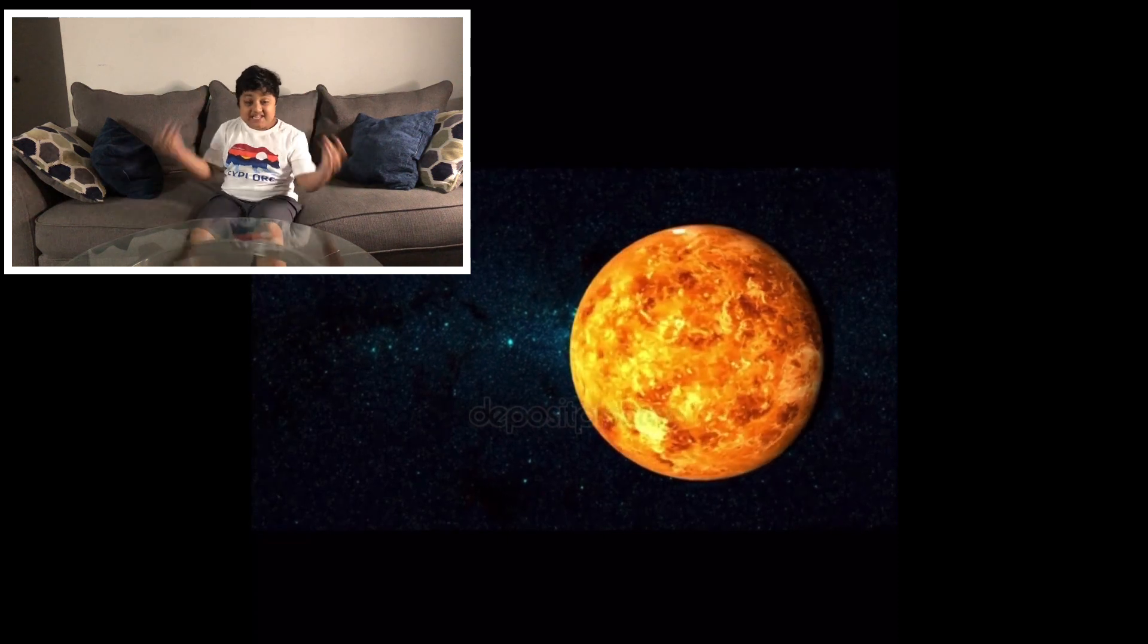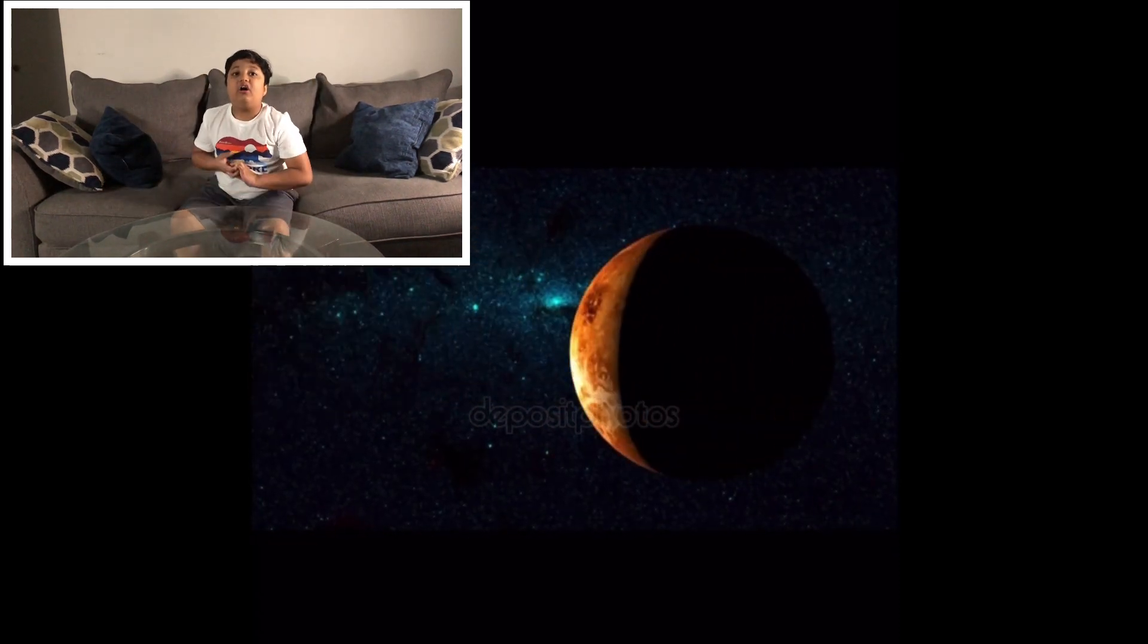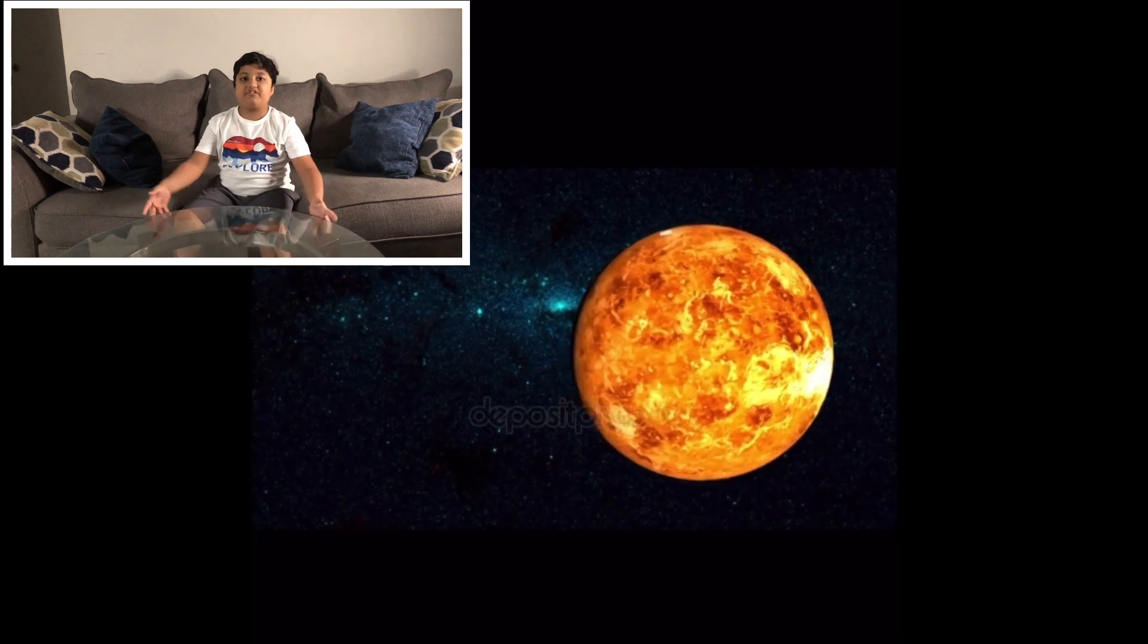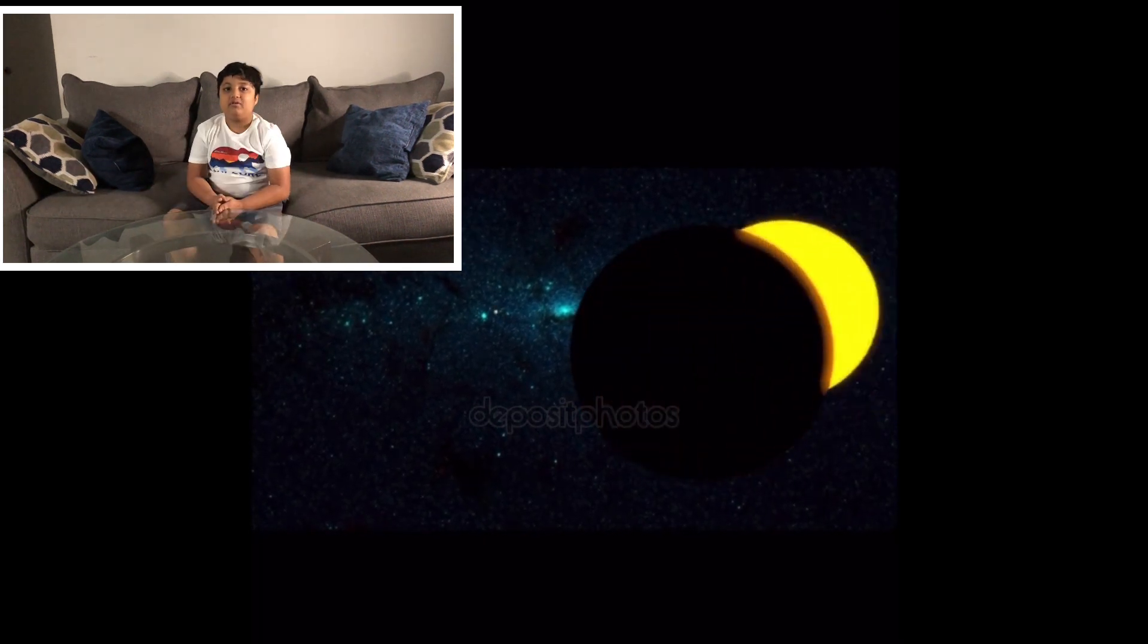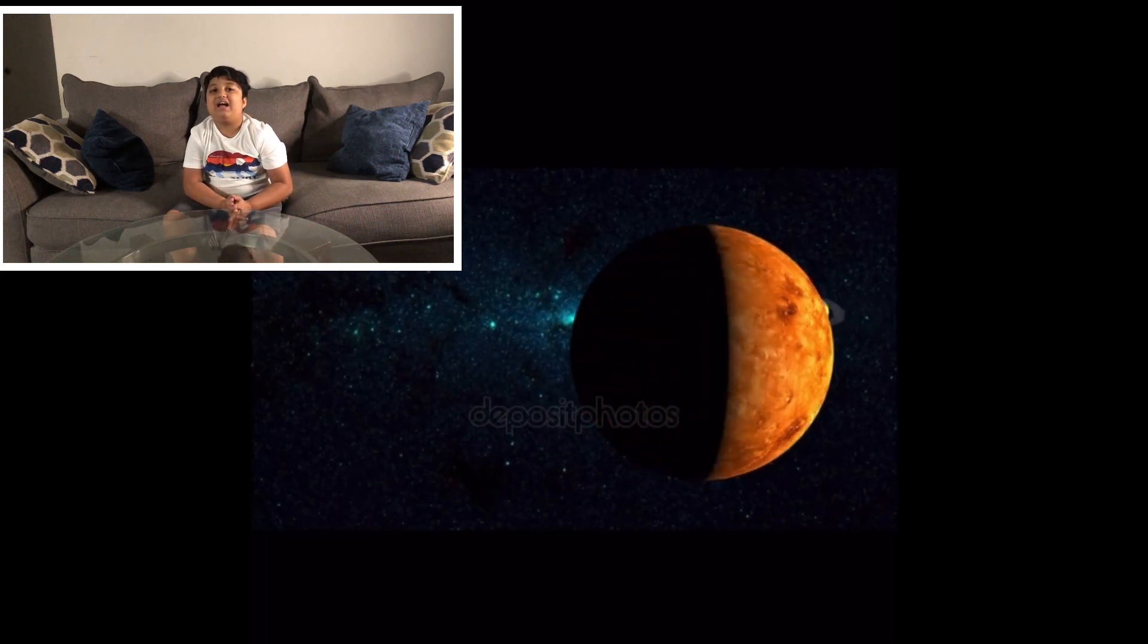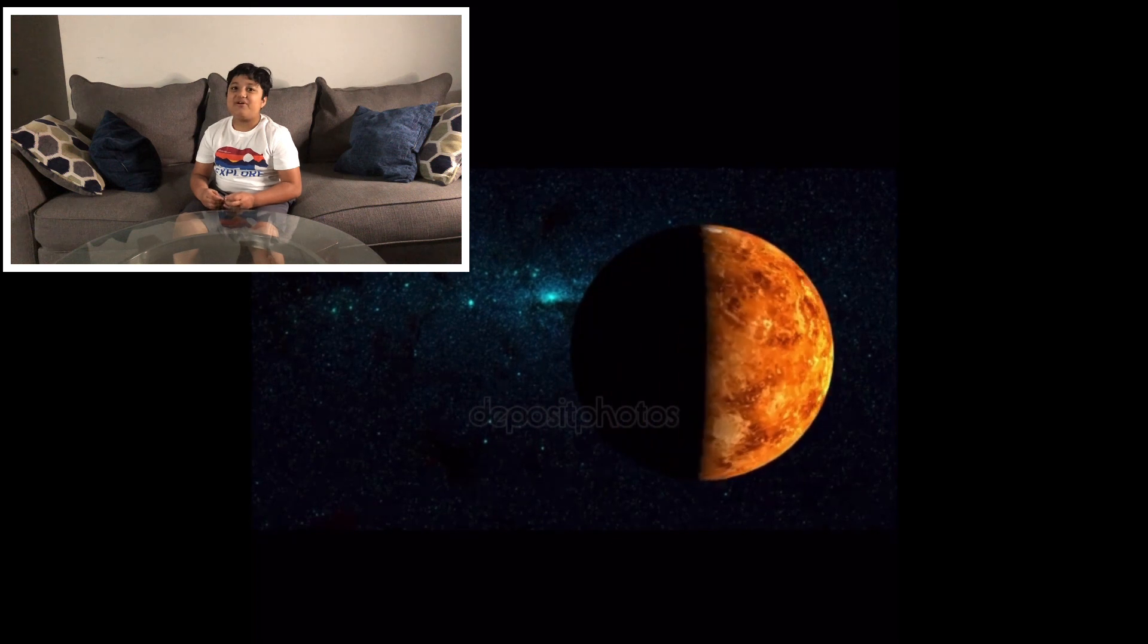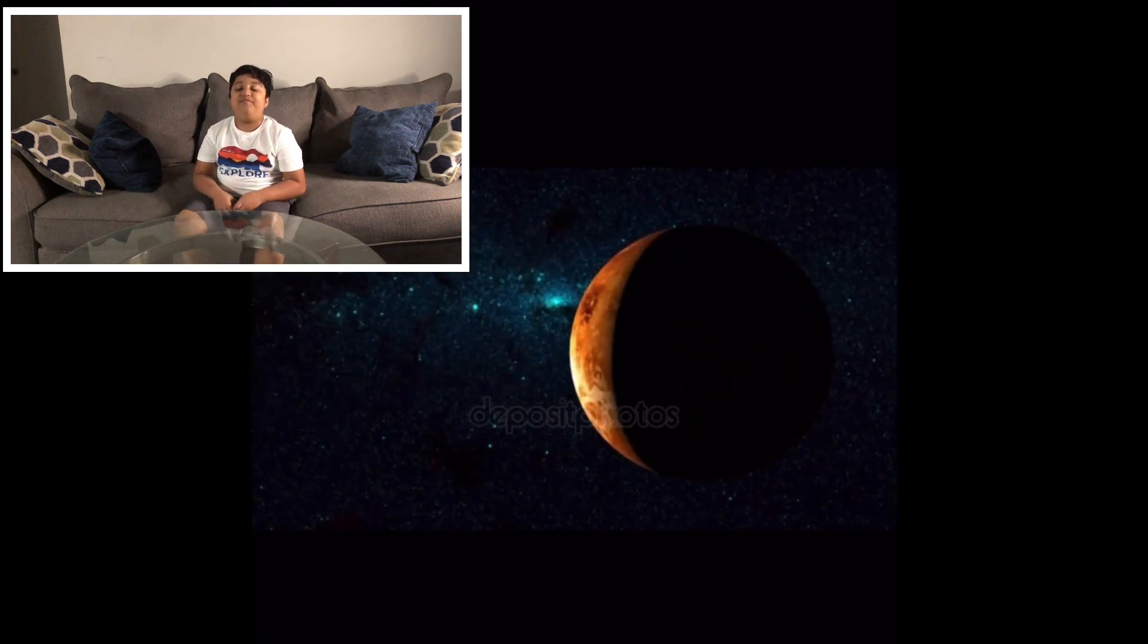The carbon dioxide traps the heat from the Sun. The clouds are made of sulfuric acid and we cannot breathe. Venus is not very fun to visit, but it looks very beautiful to look at and is the second brightest object after the Moon.